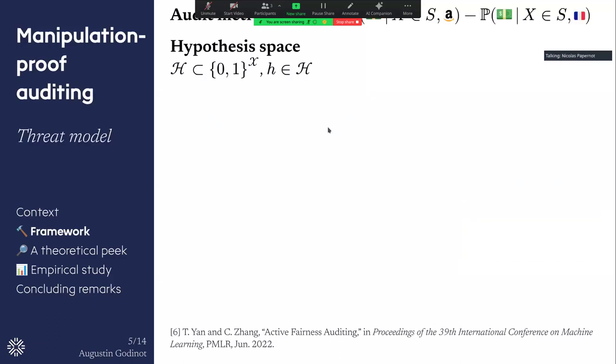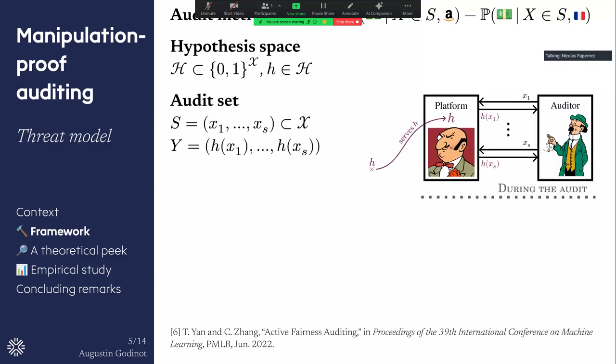So just to introduce the framework here, assume that we have an audit metric, demographic parity for example. We'll assume that we are looking at a platform which implements a binary classifier, which lives in some hypothesis space, so some space of classifiers.